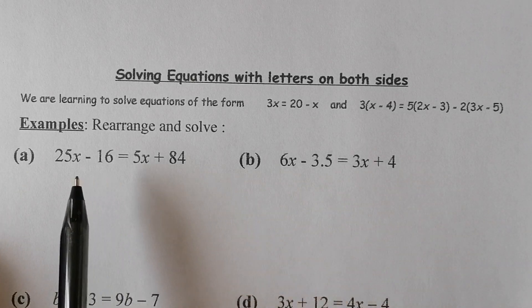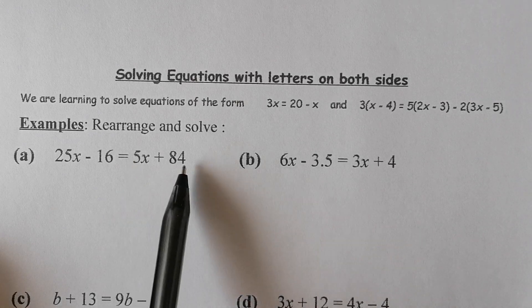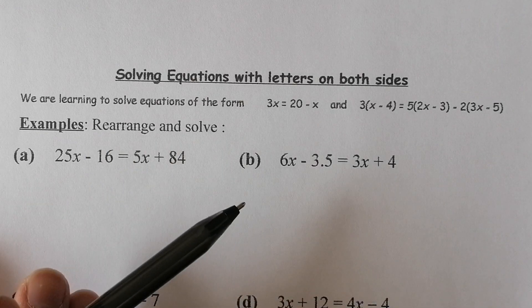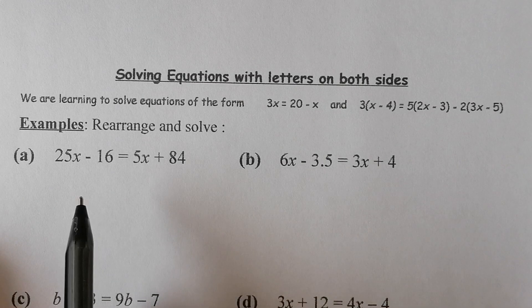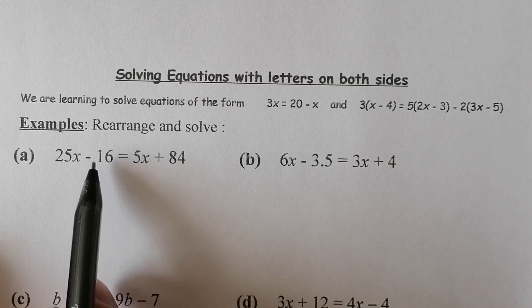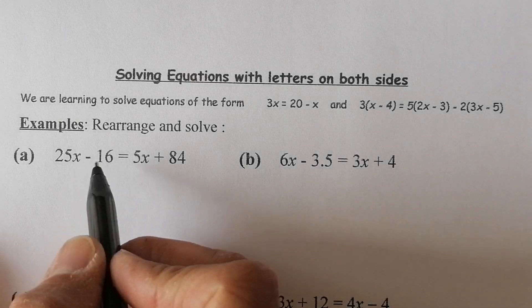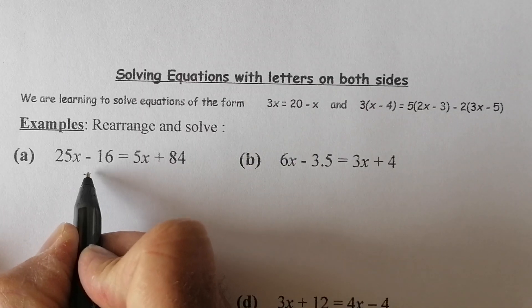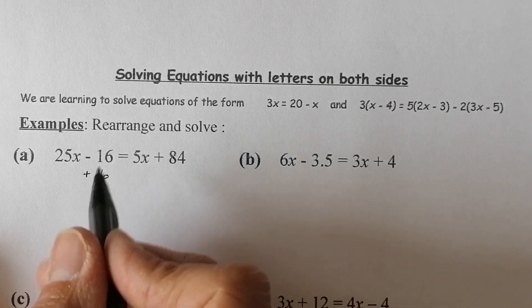Looking at this question, I'm going to rearrange and solve it. I want x's on the left-hand side and numbers on the right-hand side. I can see a number I'd rather move to the other side, so I'm going to get rid of minus 16 by adding 16 to that side — that will take me to zero and they'll cancel out.